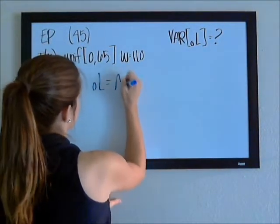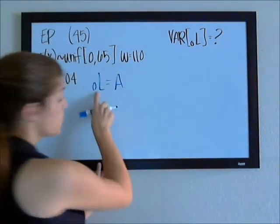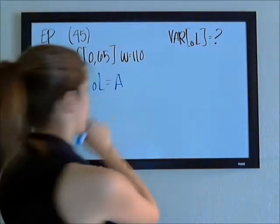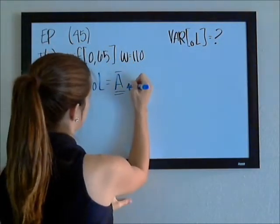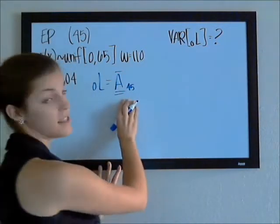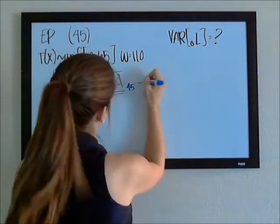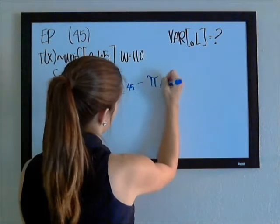So, our loss is our actual loss, which we don't know, but we're estimating, is going to be the true present value of the insurance. So, this is the money that you pay out, less the money that you bring in,